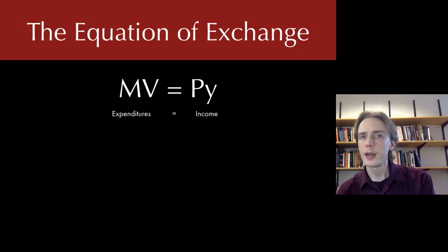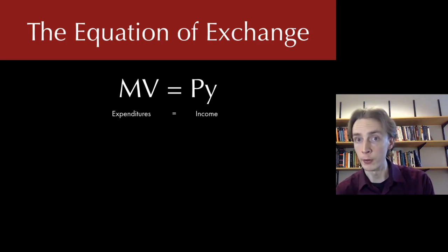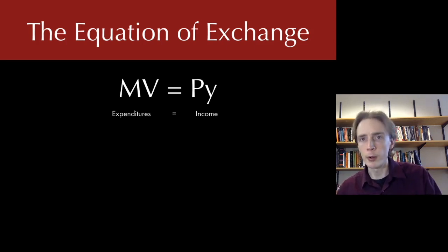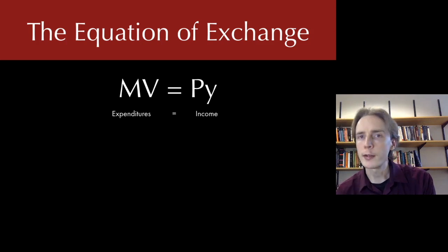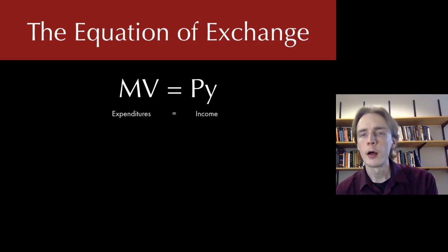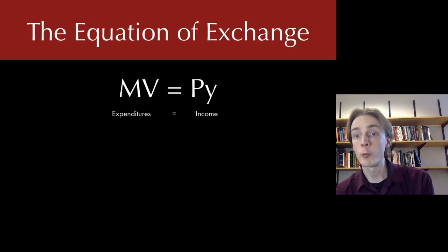Just like E equals MC squared gives you a law of conservation of mass and energy, this is our law of conservation of expenditure. Micro doesn't have to worry about conserving expenditure — if demand shifts in one market, we can assume the expenditure comes in small parts from lots of different markets. But in macro, we're dealing with big markets and can't rest on that assumption. The equation of exchange is a way of keeping track of expenditure and showing how shocks work their way through the economy.